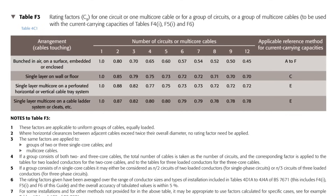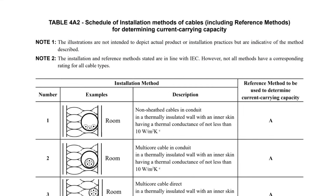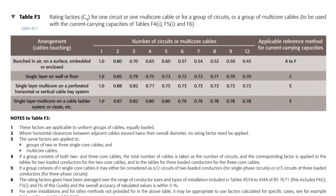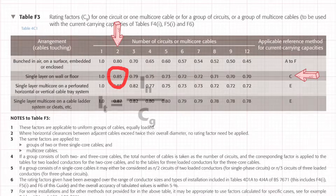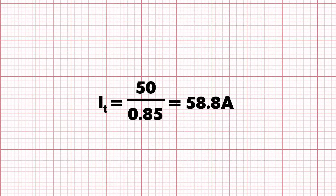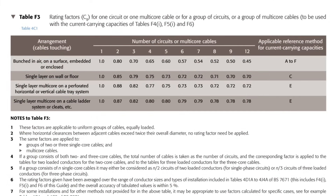If you're not sure which reference method to use, you can match the description from the left-hand column, and there's also helpful information in table 4A2 of BS7671. Let's assume we're working in a domestic installation, clipping the cable to a surface — that gives us reference method C. With another circuit alongside it, that's two circuits in total. Two circuits in a single layer on the wall gives a factor of 0.85. So 50 divided by 0.85 gives us 58.8 amps. Interestingly, if we bunched those cables together and clipped them to the surface, we'd use a factor of 0.80, meaning our cable would need to carry even more current.